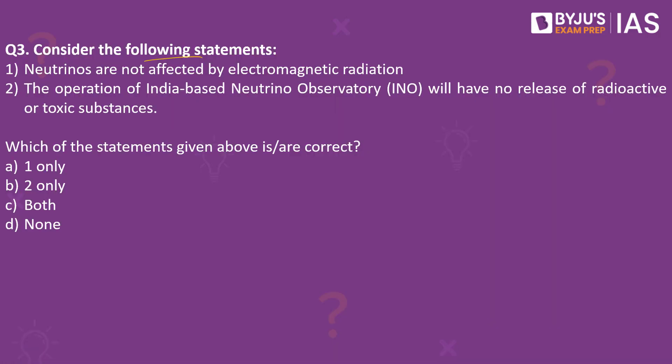Now let's look into the next practice question. Consider the following statements: Neutrinos are not affected by electromagnetic radiation. The operation of India-based neutrino observatory will have no release of radioactive or toxic substances. Which of the statements given above is or are correct? The answer to this is both.